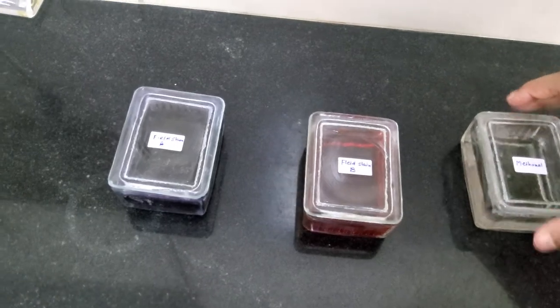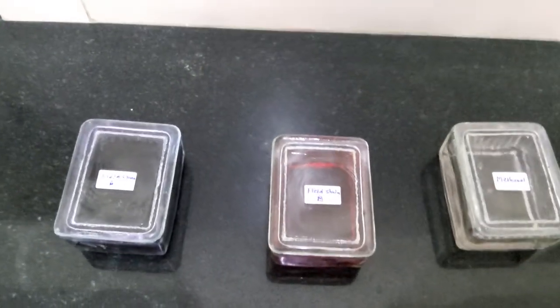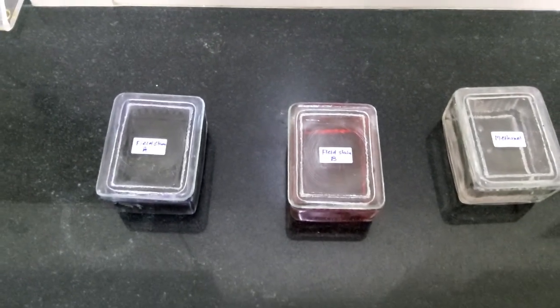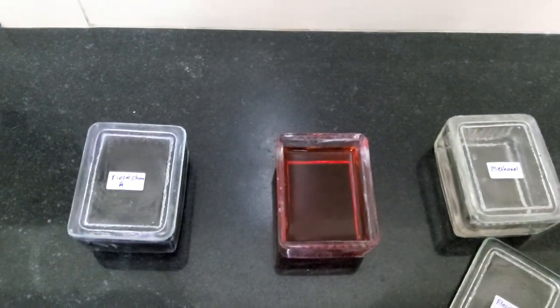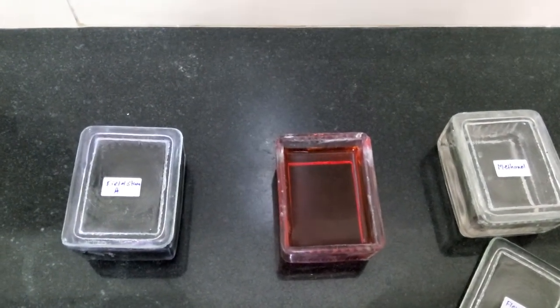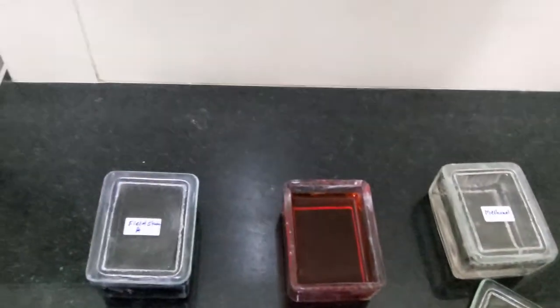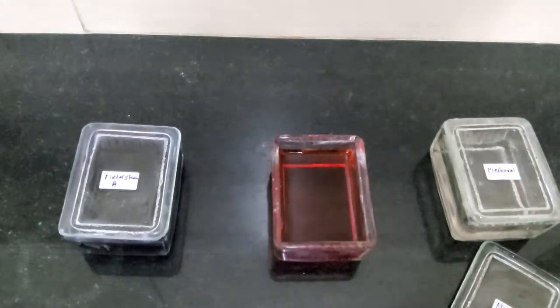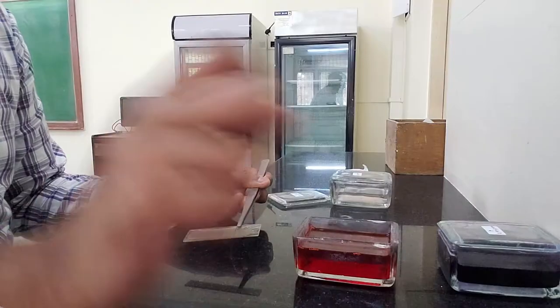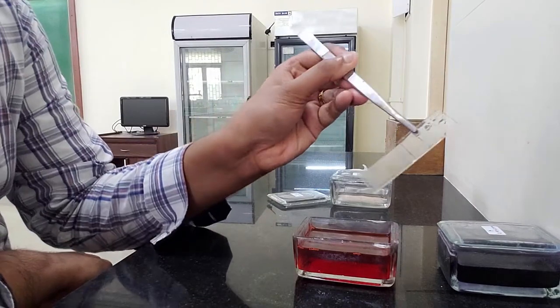The very next step after the slide dries out completely is going to be dipping it in the Field stain B for five seconds. I'm going to open and keep the Field stain B jar ready over here. Once my slide is completely dry, I will very gently using a forcep dip it into the Field stain B.